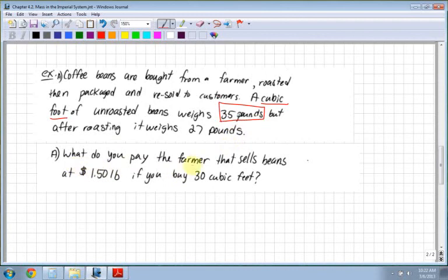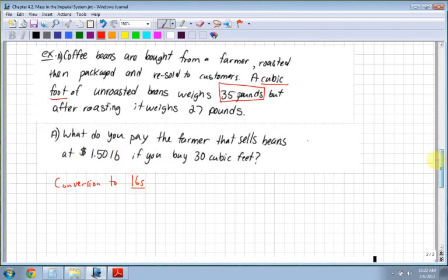So the question is, what do you pay the farmer that sells beans at $1.50 per pound if you buy 30 cubic feet? So I start off my conversion to pounds. Because we need to figure out, well, you're paying $1.50 per pound, so I need to convert everything to pounds.